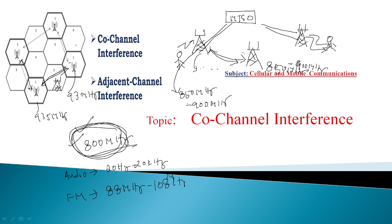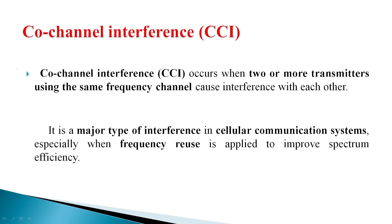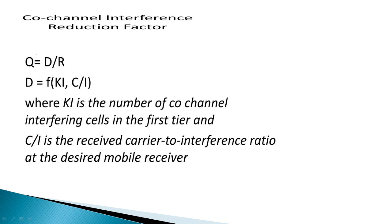The interference between adjacent channels is called adjacent channel interference. The frequency reused channels have a rule governing the use of the same group of frequency channels. The co-channel interference reduction factor is q = D/R, the quality factor.